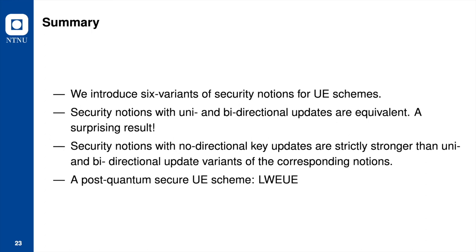Now I conclude our contributions. We introduce six variants of security notions for UE schemes — a combination of three versions of key updates and two versions of ciphertext updates. We prove that our security notions with uni and bidirectional updates are equivalent. When analyzing security, we can treat bi and unidirectional UE schemes the same, so security will not be influenced by the update direction. This means that UE schemes with unidirectional updates will not provide more security than those with bidirectional updates — a surprising result.